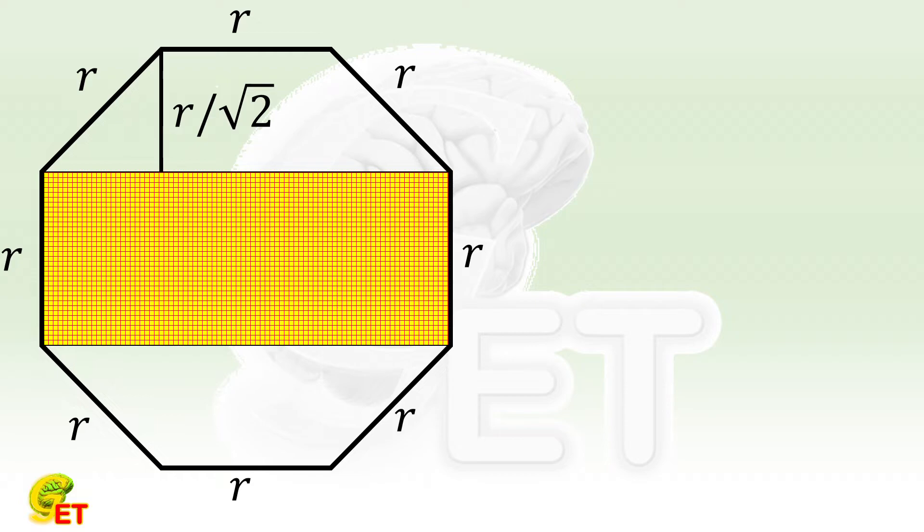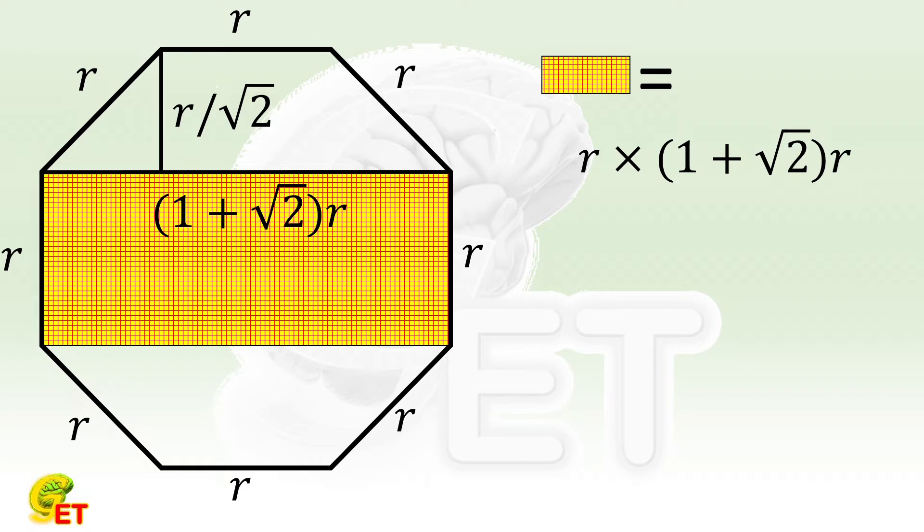The length of the longer base of the trapezoid, as well as the width of the rectangle, is 1 plus square root of 2, times r. So the area of the rectangle equals r times 1 plus square root of 2 times r, which equals 1 plus square root of 2 times r squared.